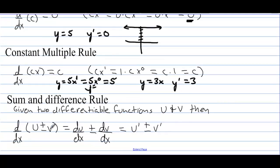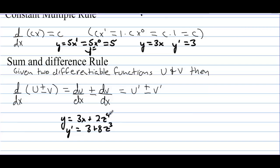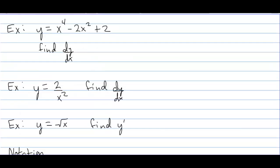The sum and difference rule: if you have the derivative of two functions added, you just take the derivative of each of the functions. For example, if we have y equals 3x plus 2z to the 4th, y prime would be 3 plus 8z to the 3rd — take 4 times 2 to get 8, reduce that power by 1. Another example: if the function is x to the 4th minus 2x squared plus 2, the derivative would be 4x to the 3rd minus 4x, and the derivative of the constant is 0.